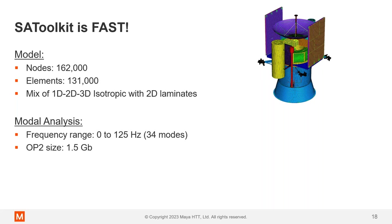Now, the key thing I want you to take away from today probably is the SA Toolkit is fast. So here we have a model. This is a sample model we did of 160,000 nodes, 130,000 elements. There's a mix of 1, 2, 3D, isotropic, 2D laminates. We had 34 modes, 0 to 125 hertz frequency range. OP2, that's a results file of 1.5 gigabytes for this model with the 34 modes.